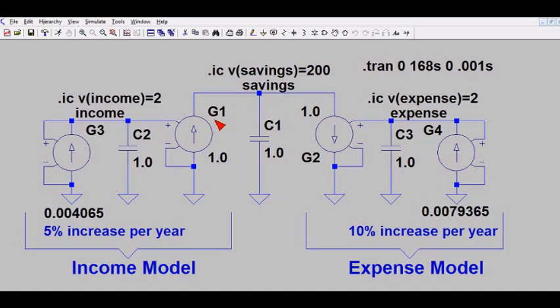Now his income is modeled by these three components on the left, and his expenses are modeled by the three components on the right. And notice that the G1 component adds his income to the savings, and G2 removes savings from this capacitor or removes charge from the capacitor.